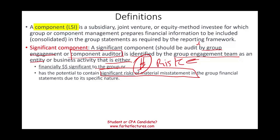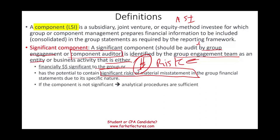Once it's a significant component, it has to be audited by either the group engagement team — which is ASI, the company in New York — or some other auditor, a component auditor. Now, if the component is not significant — simply put, the component is very small — then under those circumstances, conducting analytical procedures will suffice as far as the auditing procedure.